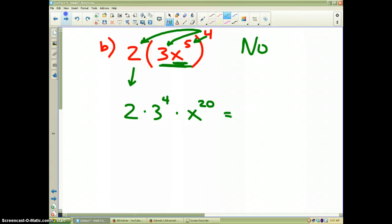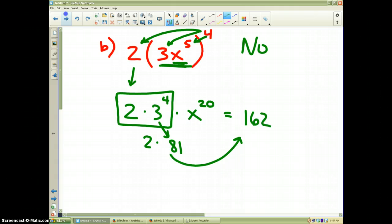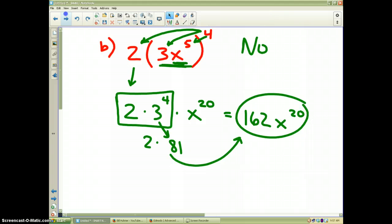Finally, I'm going to times these numbers in the box together. 3 to the fourth is 81 times 2 makes 162. And then, the x to the 20th power. And that would be my final simplification of the problem in part B.